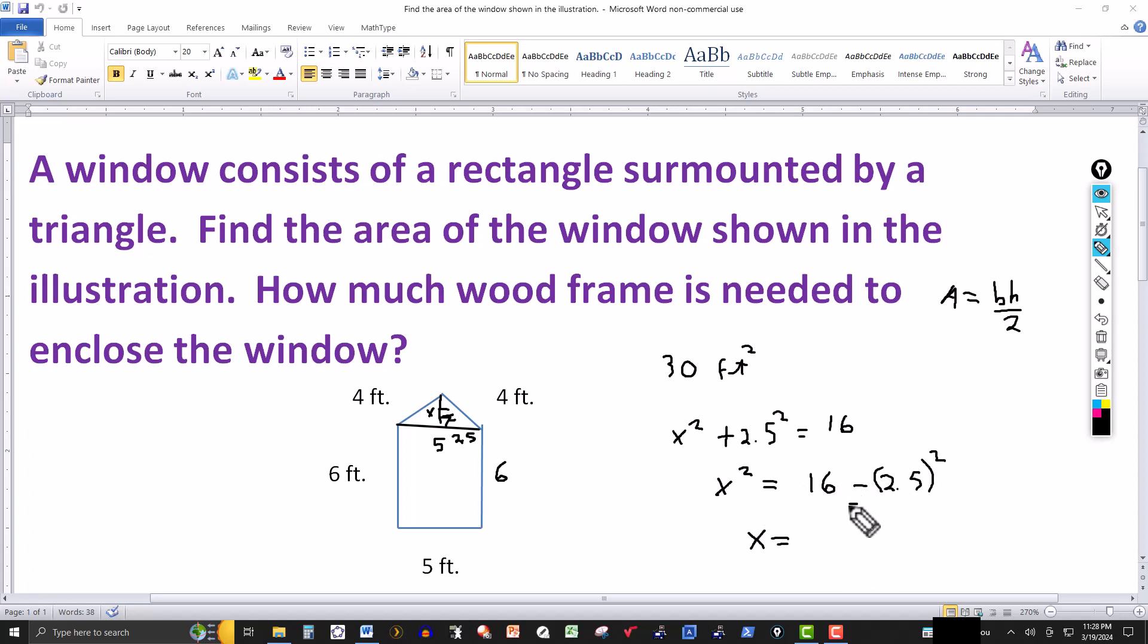This will come out to 9.75 here. That part will come out to 9.75. And then you take the square root of that. Round off. I'll round it to two places. This will be 3.12. And that's of course in feet. That would be your altitude.